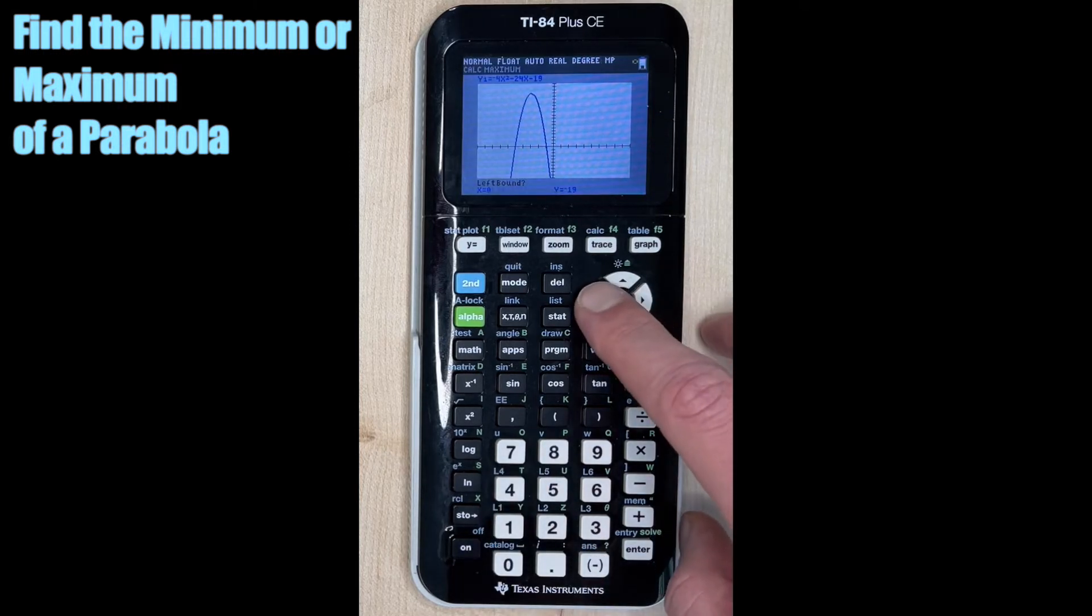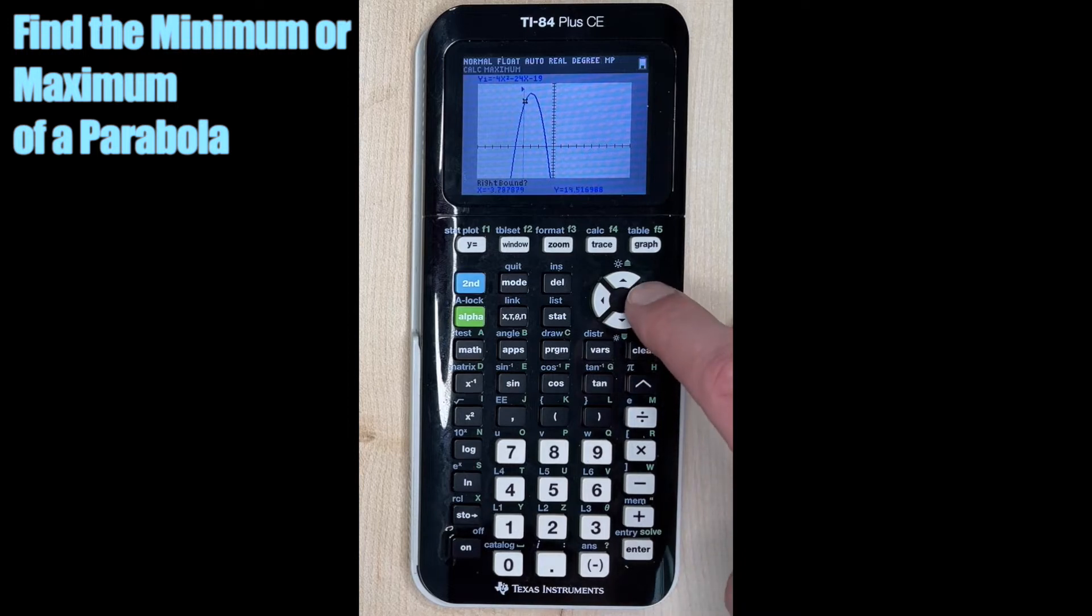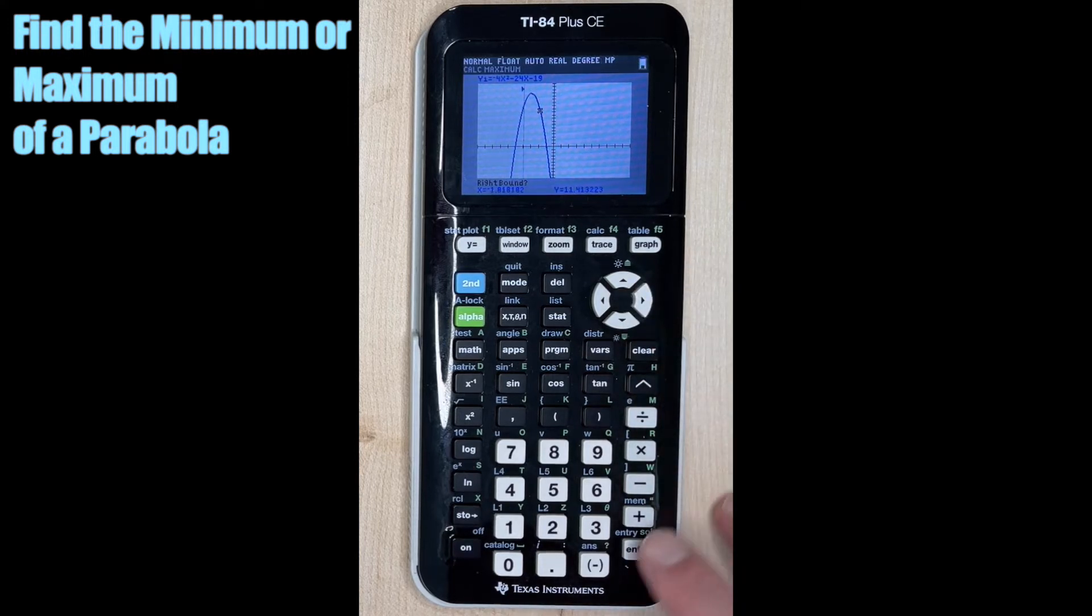So now it says left bound. We want to put our cursor on the left side of the vertex, just anywhere on the left side, and hit enter. Now we move the cursor to the right side and we hit enter again.